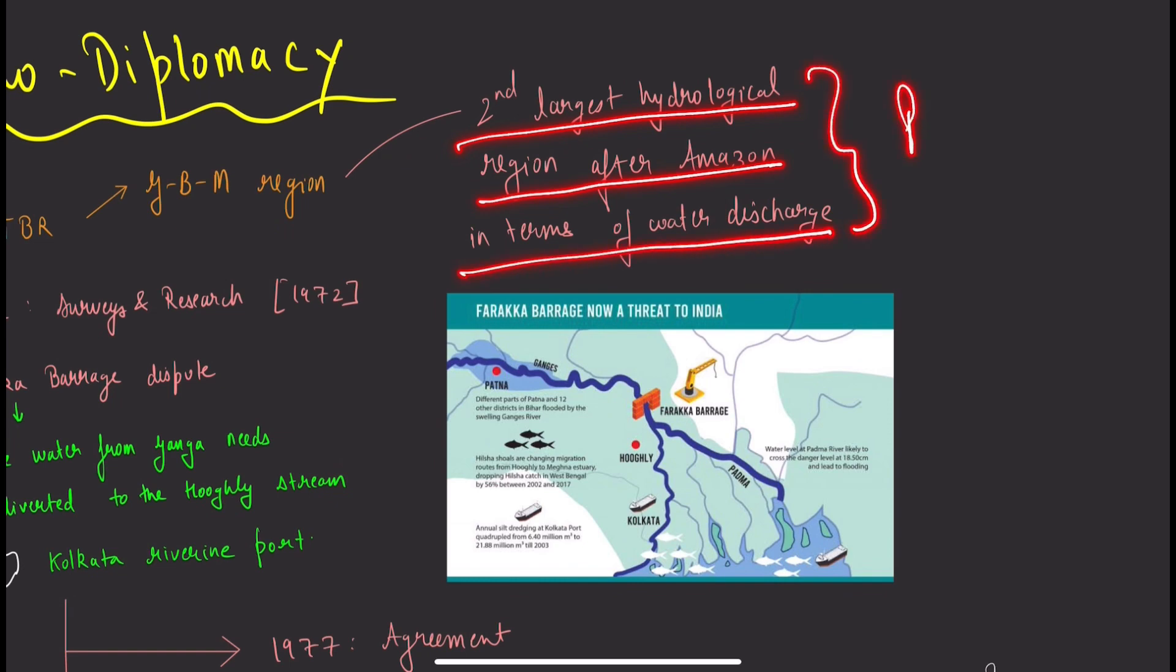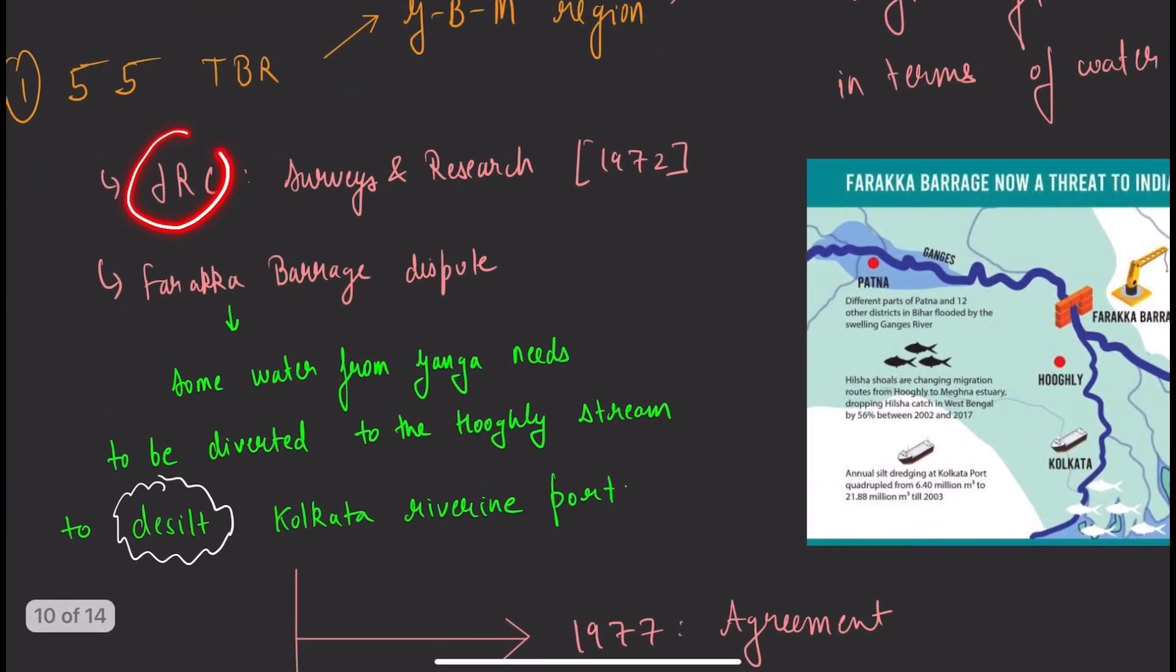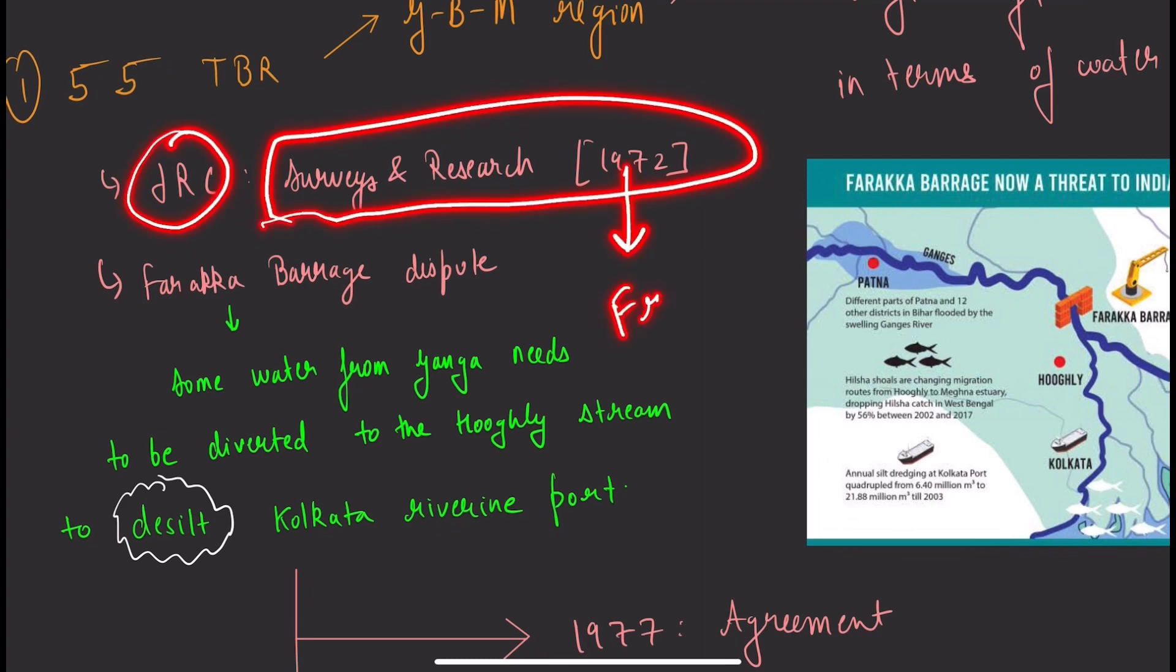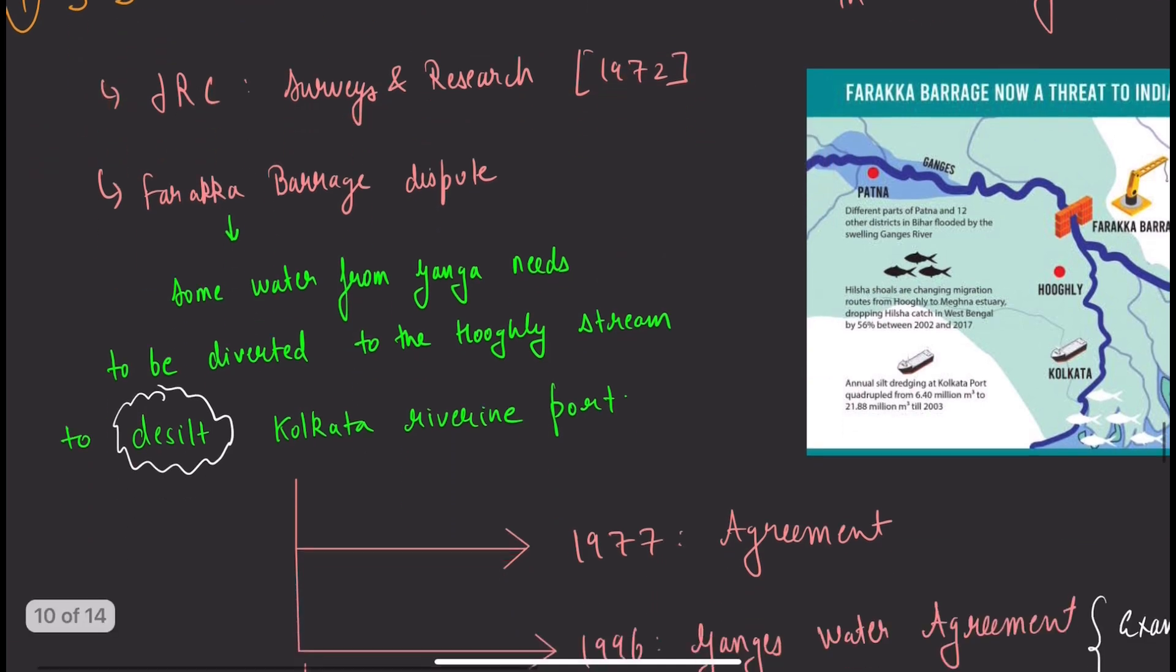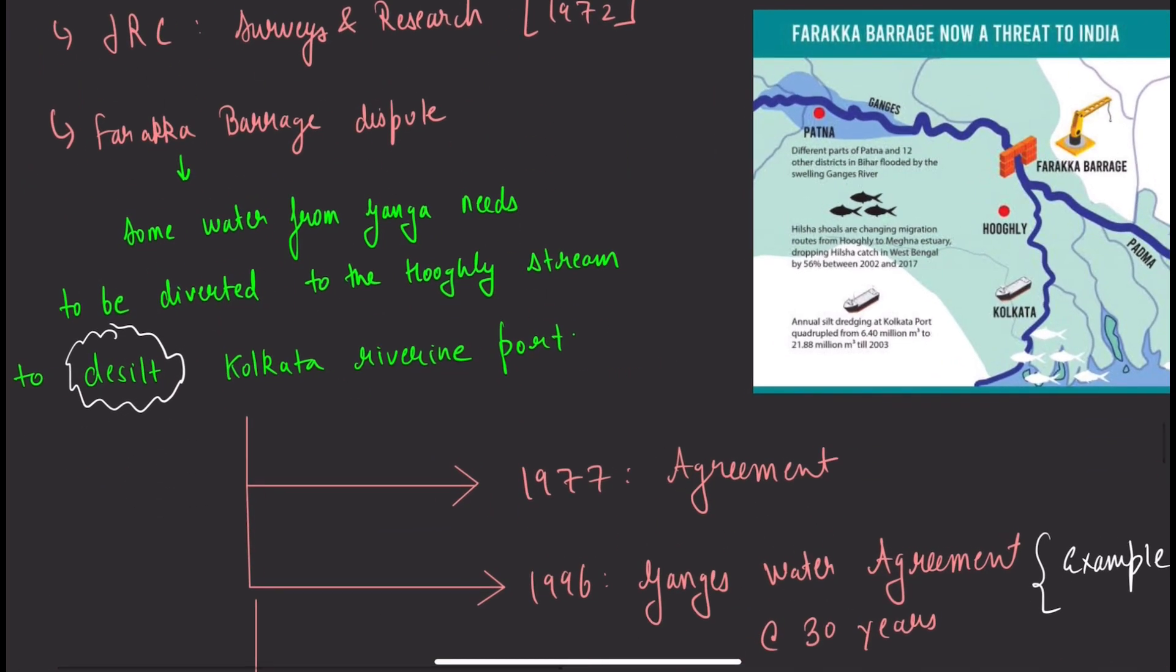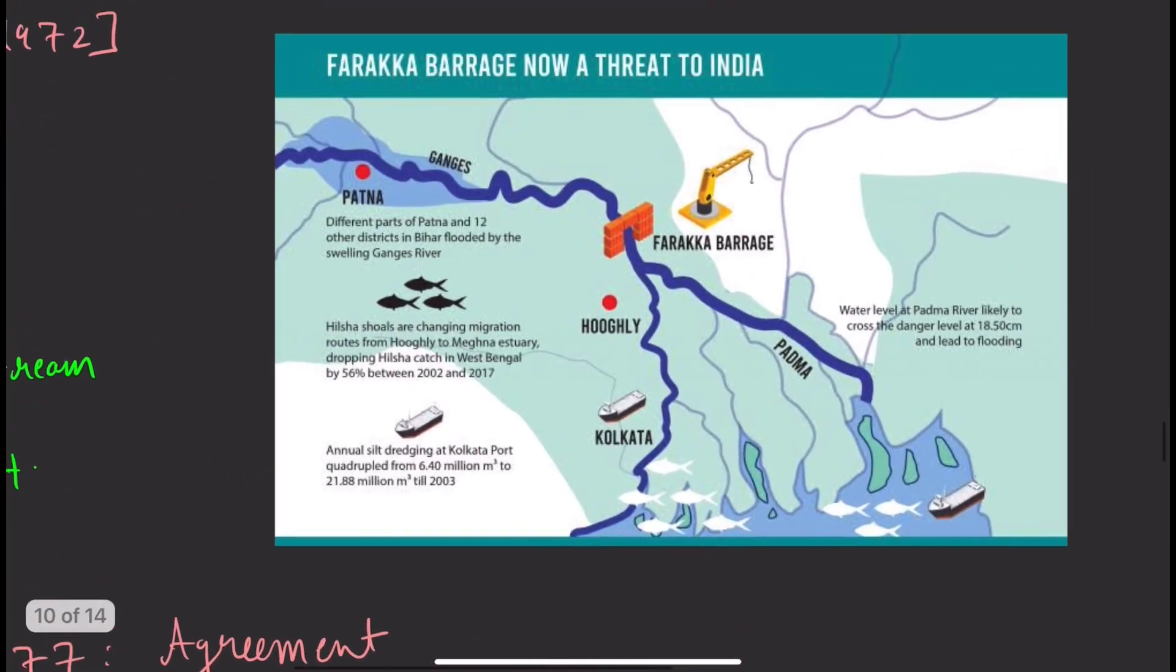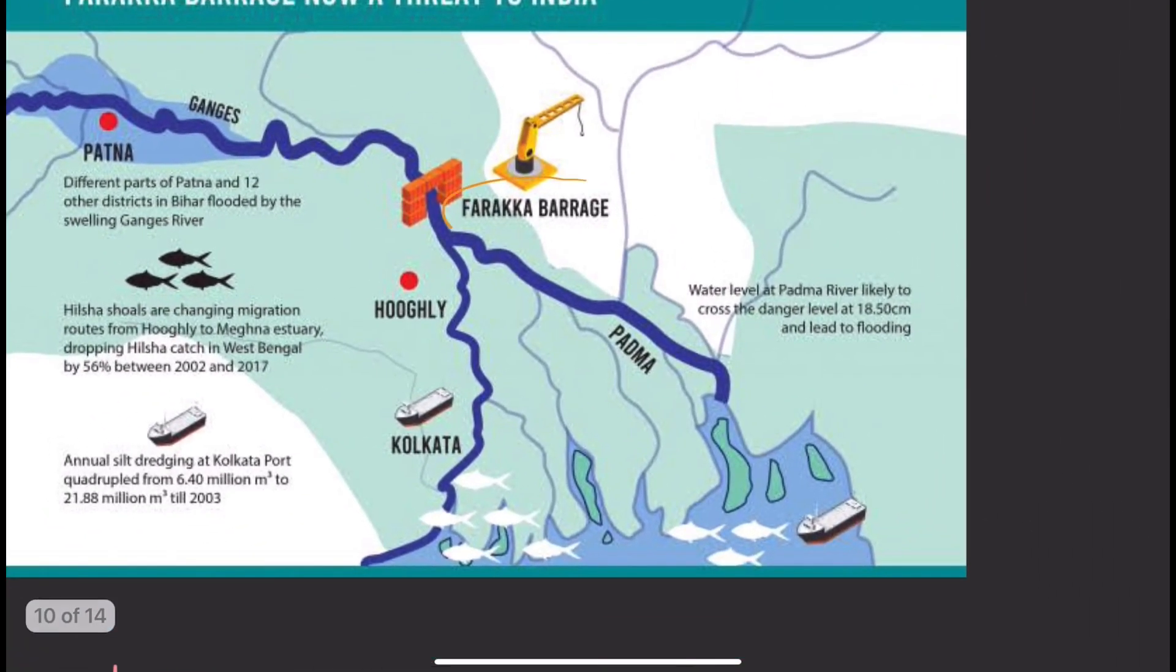We have the Joint River Commission with Bangladesh which helps in surveys and research. In 1972, when the friendship treaty was signed, the JRC was established. Then there's the Farakka Barrage dispute. Some water from Ganga needed to be diverted to the Hooghly stream to desilt the Kolkata riverine port.